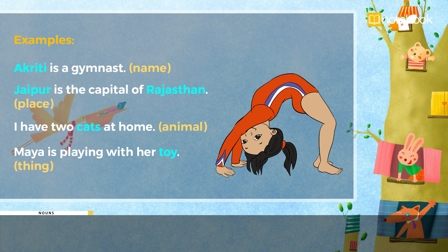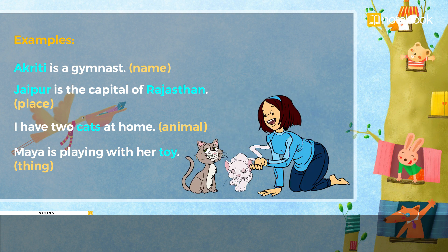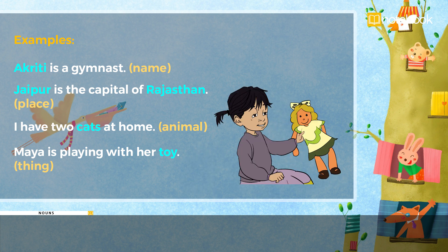Examples: Akriti is a gymnast — name. Jaipur is the capital of Rajasthan — place. I have two cats at home — animal. Maya is playing with her toy — thing.